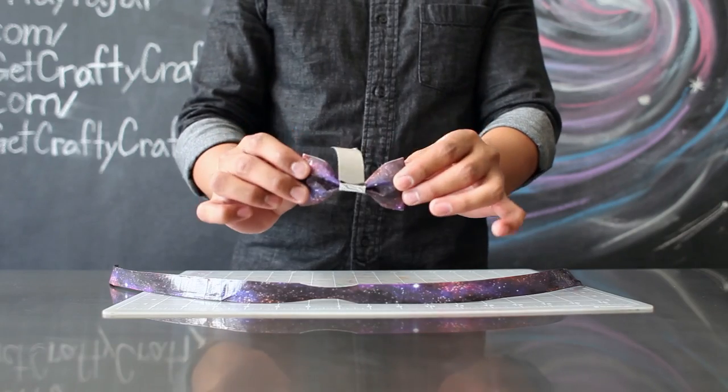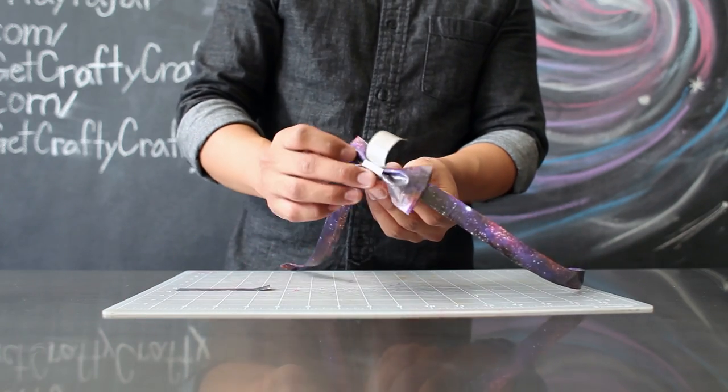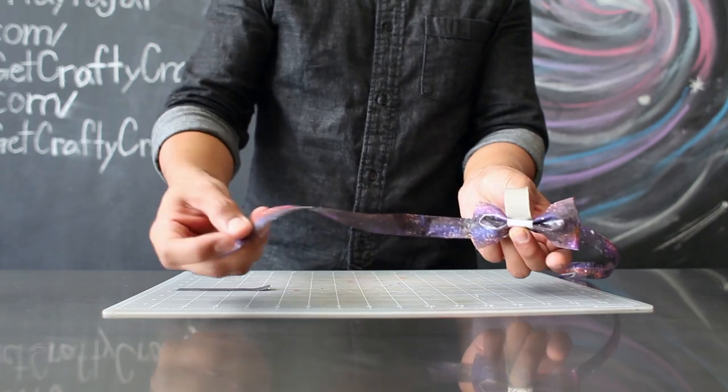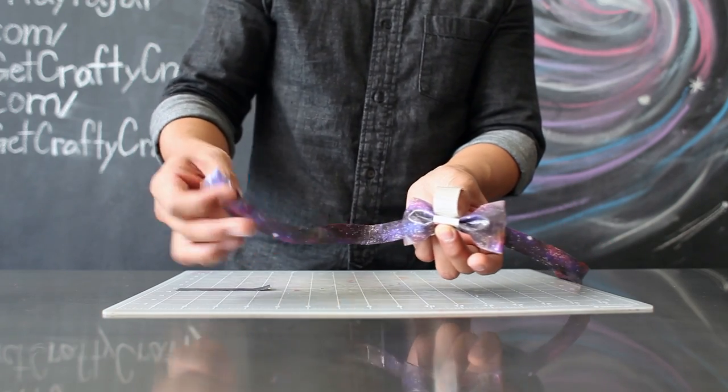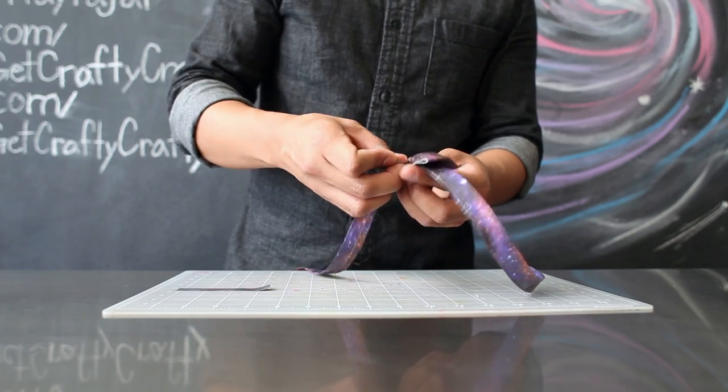After you've created the bow for your bowtie, take the collar piece and you're just going to attach it to the back and make sure that the folded part is on the inside of your collar and not on the outside. Fold this in and tape it together.